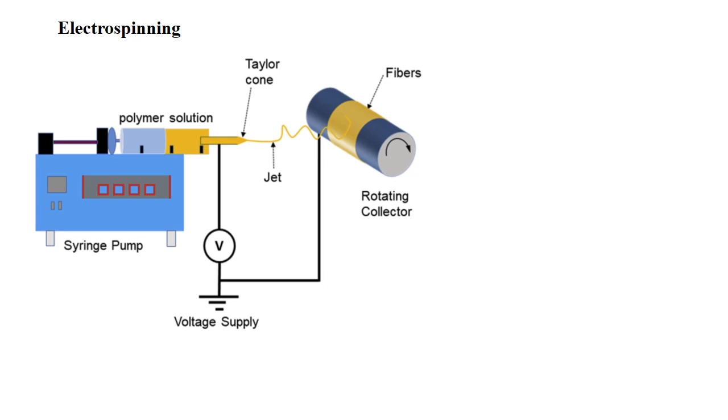In an ideal electrospinning technique, when we apply a voltage to the polymer solution, then the polymer get charged. As the result this Taylor cone will form that is the electrical repulsion forces which acting on the polymer solution which causes the droplet of sample to deform into conical shape.